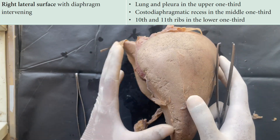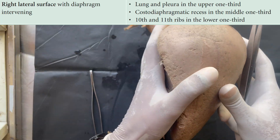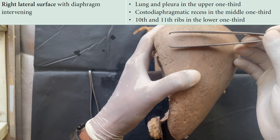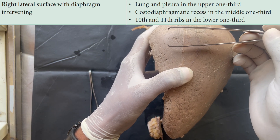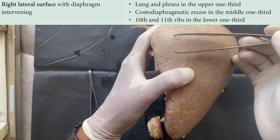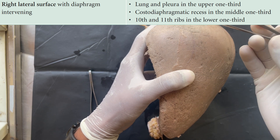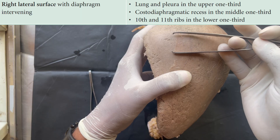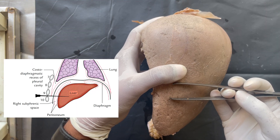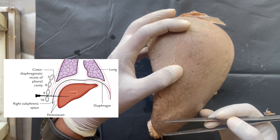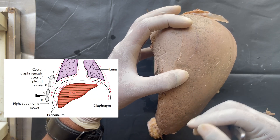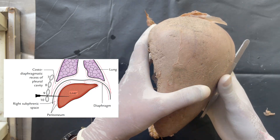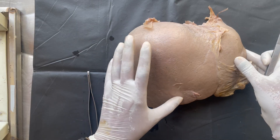Looking at the right lateral surface of the liver, we divide it into three parts: upper one-third, middle one-third, and lower one-third. This surface is covered by and related with the diaphragm and ribs 7 to 11. The upper one-third is related with the lungs and pleura, the middle one-third with the costodiaphragmatic recess, and the lower one-third with the 9th and 10th ribs. Liver biopsy is therefore taken from the 9th and 10th intercostal spaces.